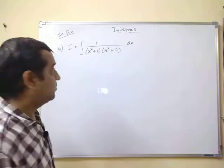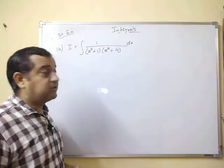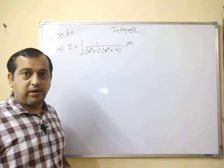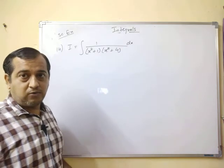Proceeding further, we come to the next question, question number 14. I equals integral 1 upon x square plus 1, x square plus 4 dx. Now how to solve this?